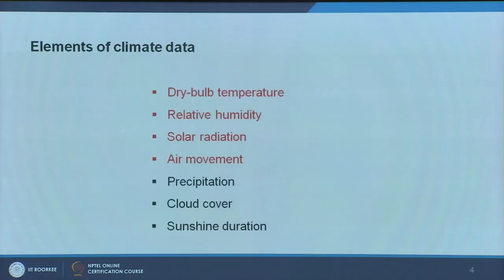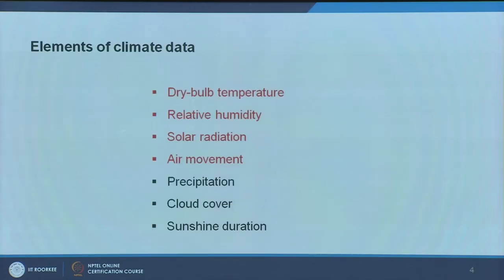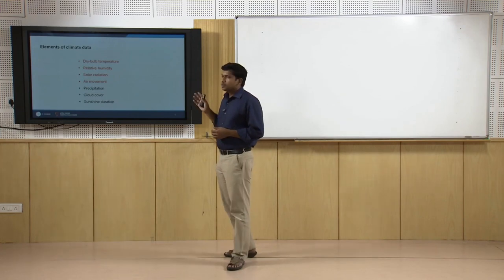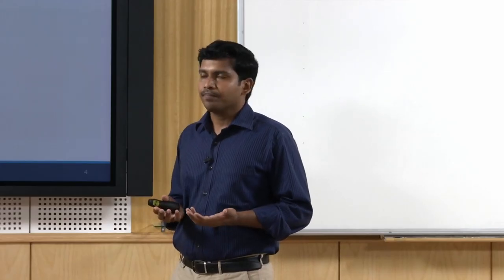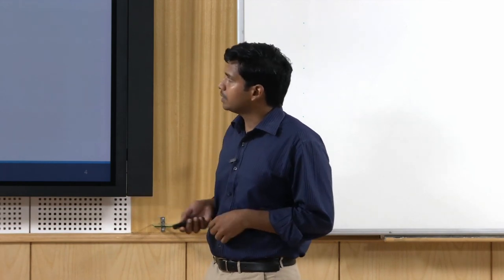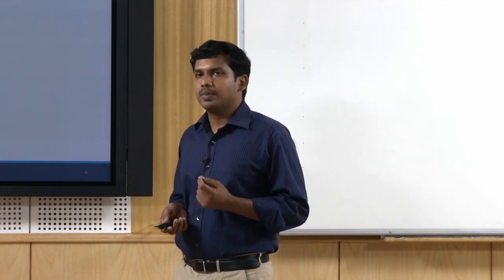Primarily, the climate variables we are going to talk about: dry bulb temperature, that is the most basic parameter — the environmental variable — followed by relative humidity. Both are measured using a device called a Stevenson screen, a louvred box inside which the temperature and humidity sensors are kept. Then solar radiation, air movement, precipitation, cloud cover, and sunshine duration in a specific location. These are the major elements based on which climate classification is done.